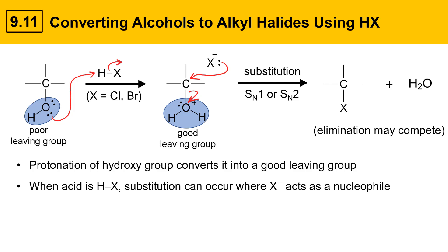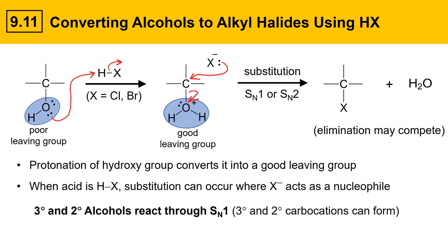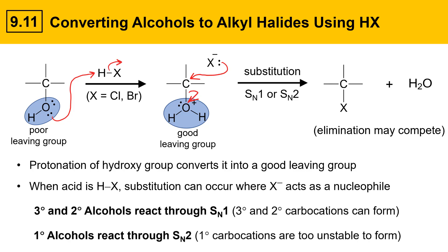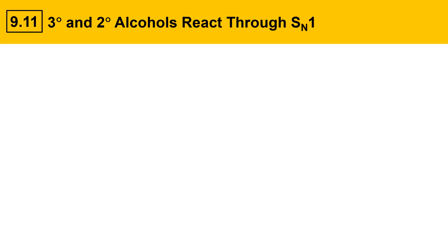The mechanism depends on the substitution of the alcohol that you start with. Tertiary and secondary alcohols react through an SN1 mechanism, because tertiary and secondary carbocations can form — they're stable enough to form. However, primary alcohols react through an SN2 mechanism, because primary carbocations are just too unstable to form.